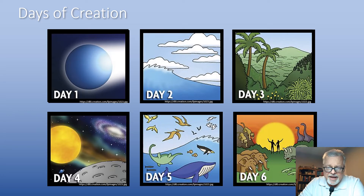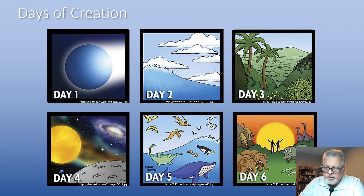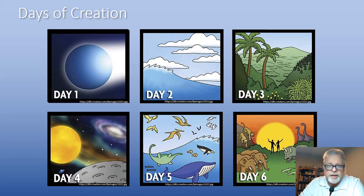Here are the days of creation — there were six. We're going to see that science also describes six long periods of time in its story about the creation of the universe. Believe it or not, every single one of these days that Moses mentioned and the creatures created are exactly the same as what science says happened in the six eons. We'll talk about that in detail.